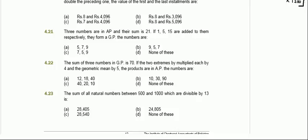Problem 4.21 says that 3 numbers are in arithmetic progression and their sum is 21. We can say that the first number is a, the second number is a plus d, and the third number is a plus 2d.